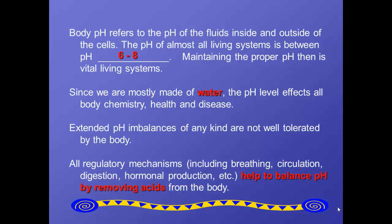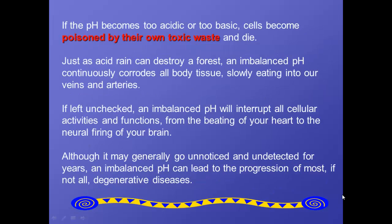If you have a pH imbalance for a really long time, your body has all these regulatory mechanisms to help balance the pH, and it does that by removing as many acids from the body as it can. But sometimes that's not enough, and the pH does become too acidic or too basic, and cells will get poisoned by their own toxic waste and die.